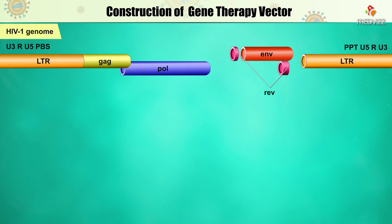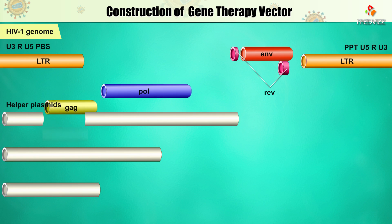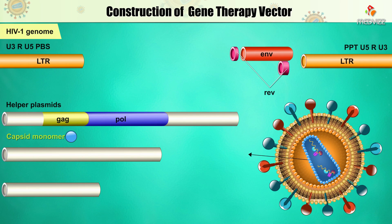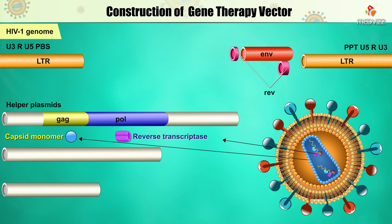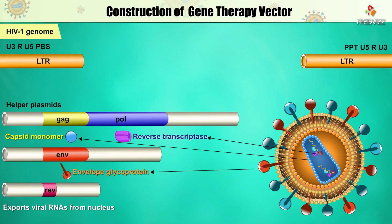Other protein-encoding genes called gag, pol, env, and rev, which are necessary for virion production, have been put into DNA helper plasmids to be provided only in tissue culture for vector production. The gag gene provides the capsid monomer, the pol gene provides reverse transcriptase, and env provides the envelope glycoprotein. The product of the rev gene does not enter viral particles but is important for exporting viral mRNAs from the nucleus to the cytoplasm during infection.